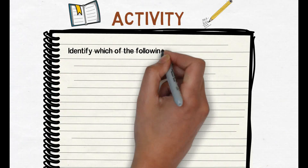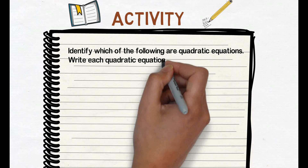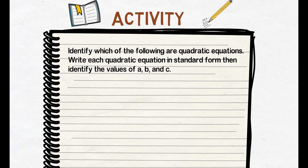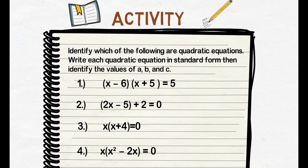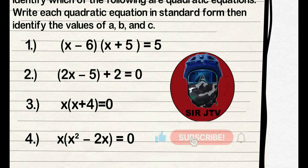For your activity, identify which of the following are quadratic equations. Write each quadratic equation in standard form, then identify the values of a, b, and c. Number 1: the product of x minus 6 and x plus 5 equals 5. Number 2: quantity 2x minus 5 plus 2 equals 0. Number 3: the product of x and x plus 4 equals 0. Number 4: the product of x and x squared minus 2x equals 0. You may comment your answers in the comment box. That's all for now — hope you learned a lot from this video lesson. Don't forget to subscribe to stay updated on future video lessons. Goodbye!